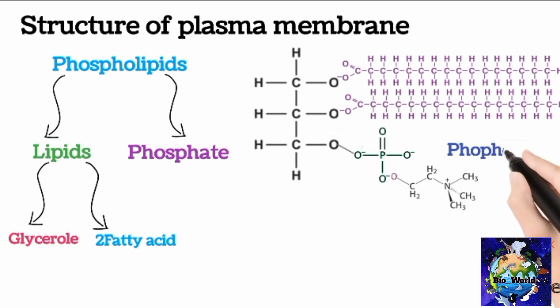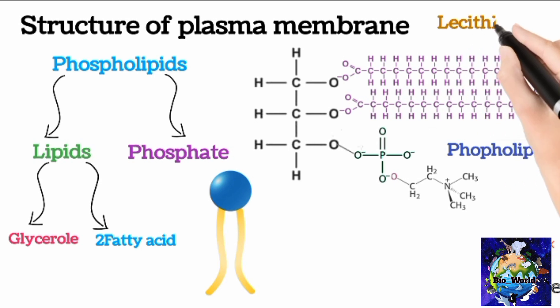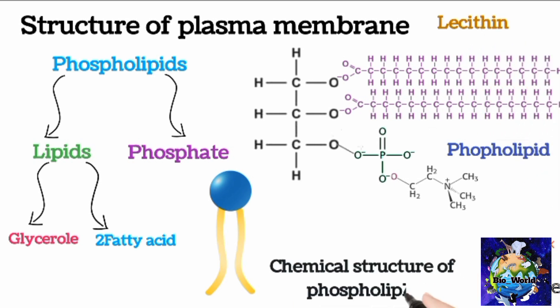This complete structure is called a phospholipid. It appears something like this in membrane, that has a head and tails. It is also known as lecithin. This was the chemical structure of phospholipid.